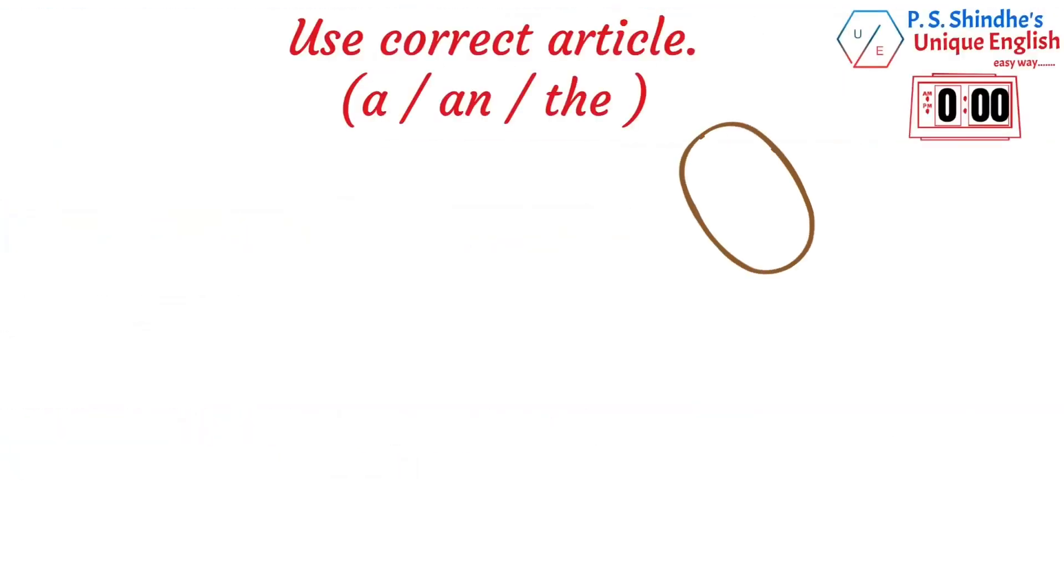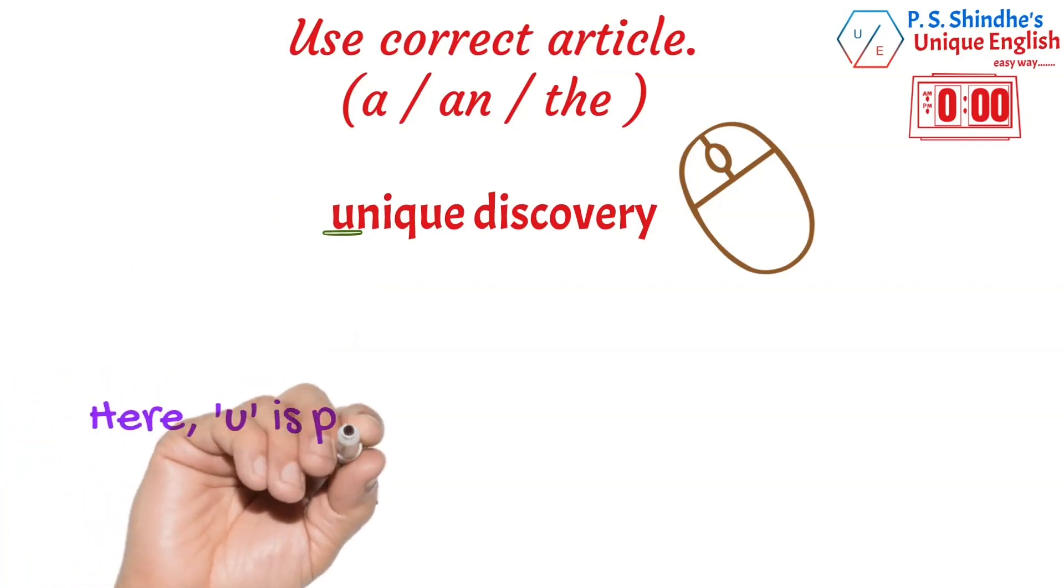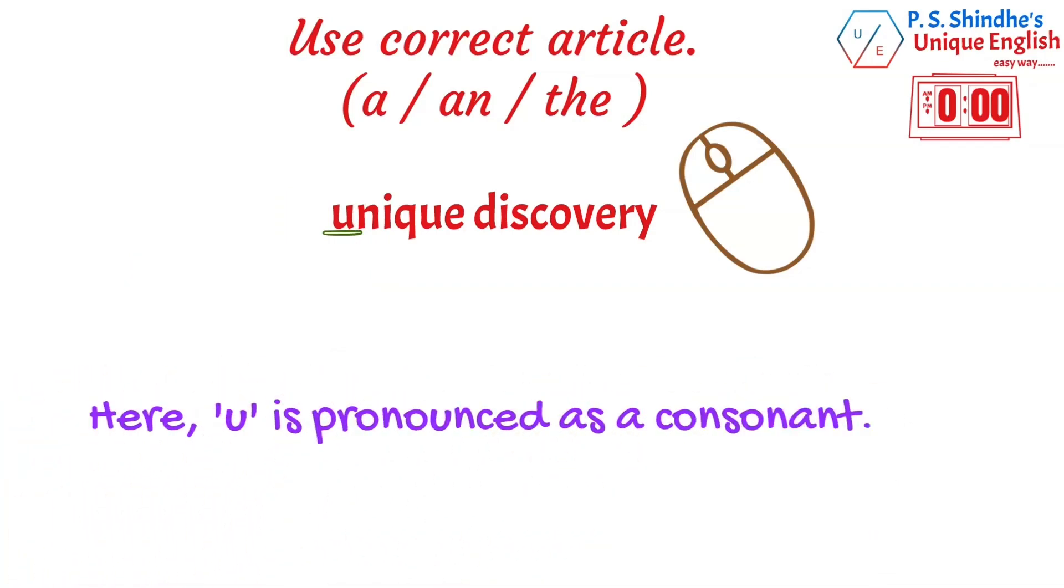Unique discovery. The word unique is pronounced with a silent u, making a consonant sound. In this case, the correct form would be a unique discovery.